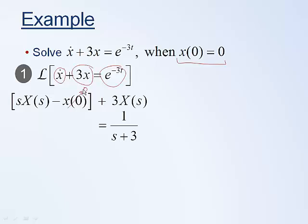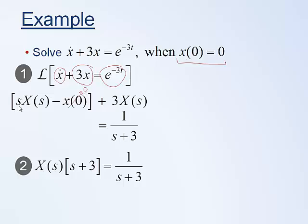Step 2 is to solve the algebraic equation — that is, isolate X(s). On the left-hand side we have s·X(s) + 3·X(s), so we can factor out X(s), leaving (s+3)·X(s). We then divide both sides by (s+3) to solve for X(s).